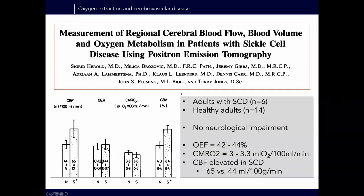Historically, there's data from the PET literature: six sickle cell patients and 14 controls with O-15 PET, generally considered the gold standard for oxygen extraction and CMRO2 mapping. In sickle cell, blood flow was elevated to offset the anemia and blood volume was also increased, but oxygen extraction fraction and oxygen consumption were not significantly different from controls — about 42–44% OEF. These were also relatively healthy sickle cell patients with no neurological impairment. O-15 PET is expensive, requires arterial lines and an on-site cyclotron, so we want to do this with MRI.